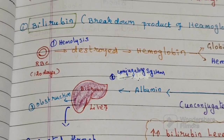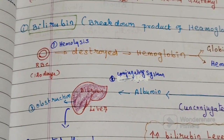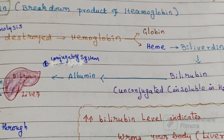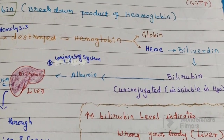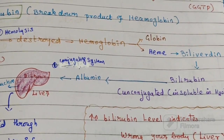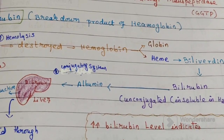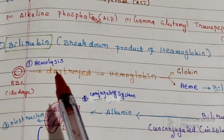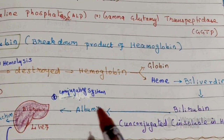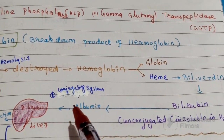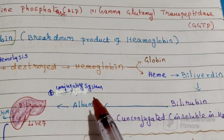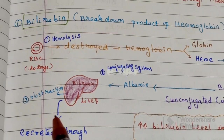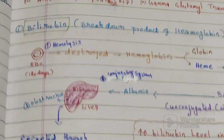If there is an increase in bilirubin level, it indicates that something is wrong in your body, particularly the liver. The main causes of increased bilirubin level in blood are: first, hemolysis (breakdown of RBCs); second, failure of the conjugating system of the liver; and third, obstruction in the biliary system.